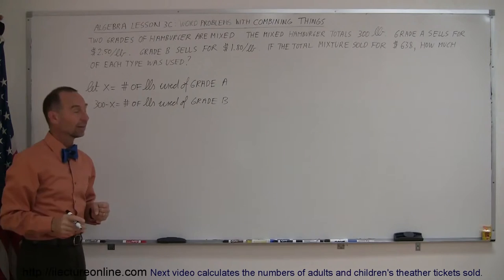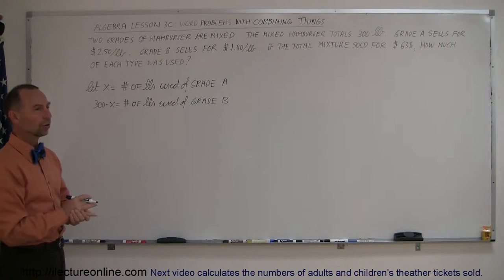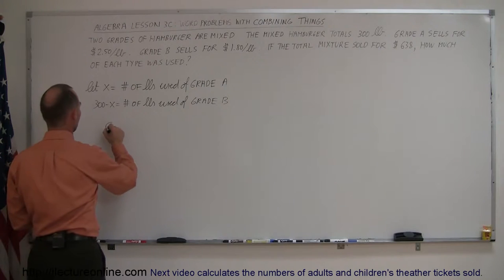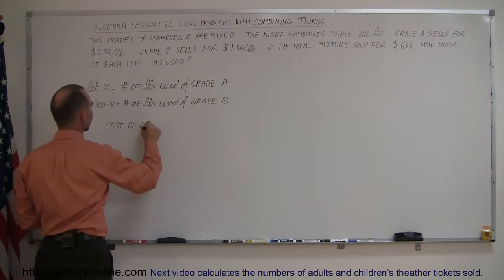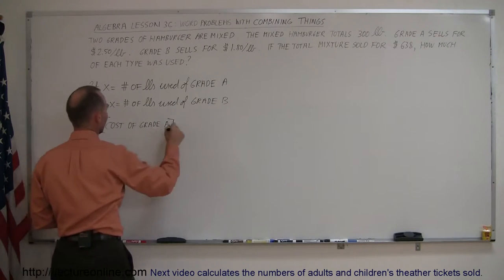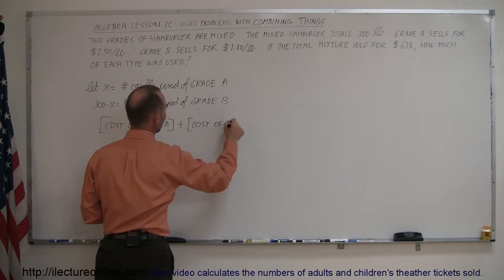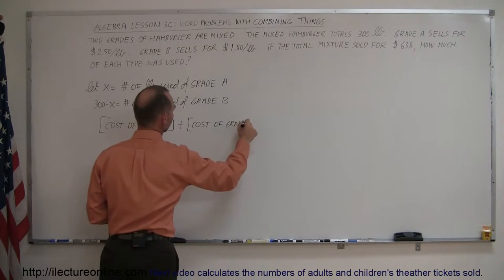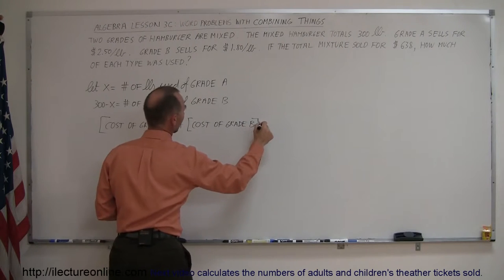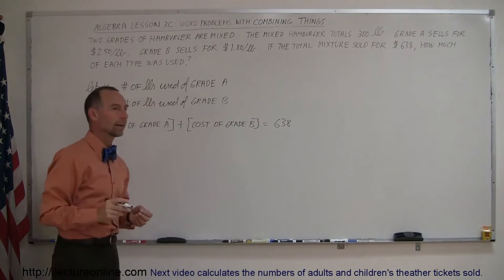Now they tell us that the total mixture sold for $638. So, the cost of the grade A hamburger plus the cost of the grade B hamburger totals up to $638.